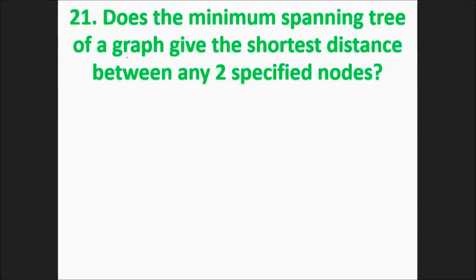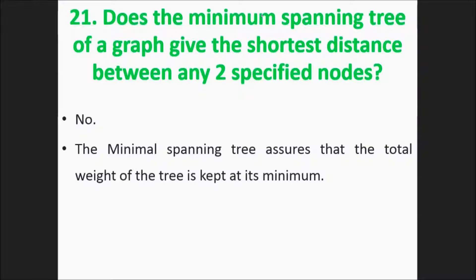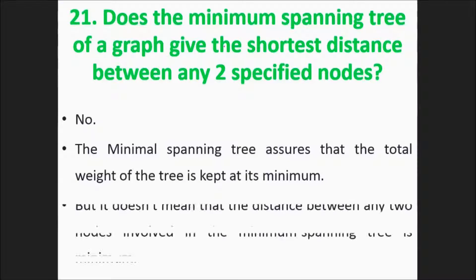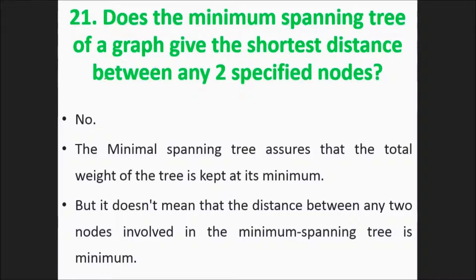Does the minimum spanning tree of a graph give the shortest distance between any two specified nodes? No. The minimum spanning tree shows that the total weight of the tree is kept to its minimum, but it doesn't mean that the distance between any two nodes involved in the minimum spanning tree is minimum.